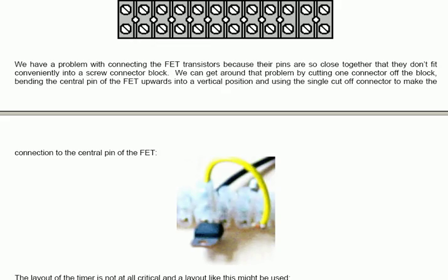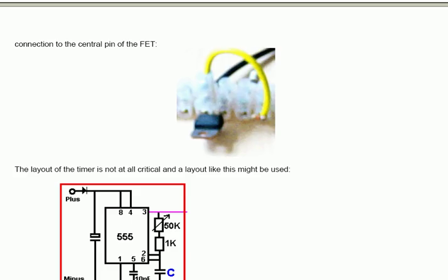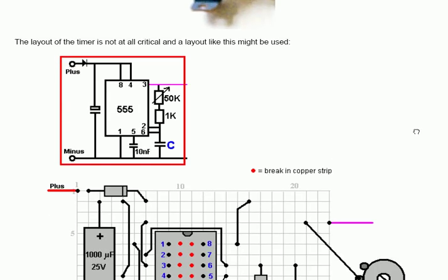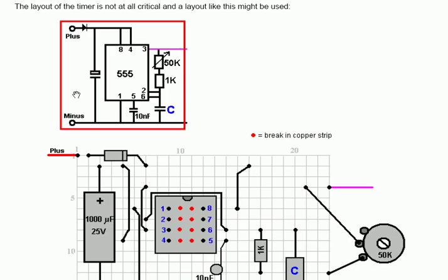We have a difficulty in connecting FET, or field effect transistors, using screw connectors, because their pins are so close together that they don't fit conveniently into a screw connector block. We can get around that problem by cutting one connector off the block, bending a central pin of the FET upwards into a vertical position, and using the single cut-out section of the connector to make the connection to the central pin of the FET. The layout of the timer is not at all critical, and a layout like this might be used. That's the circuit, and this is a suggested layout.